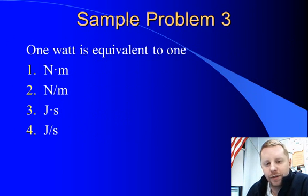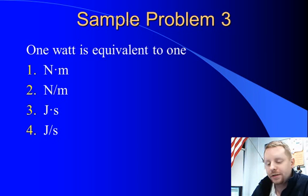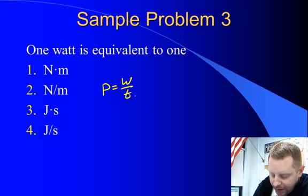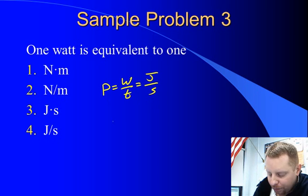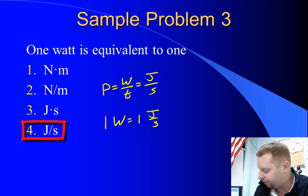Here we have a question on units. One watt is equivalent to what? We've got a choice of a Newton meter, Newton per meter, a joule times a second, or a joule per second. And if you recall, a watt is a unit of power and power is work or energy divided by time. Units of work or energy are joules. Time is in seconds. So a watt is going to be equal to a joule per second. One watt equals one joule per second. Therefore our answer must be choice four.